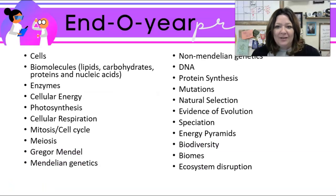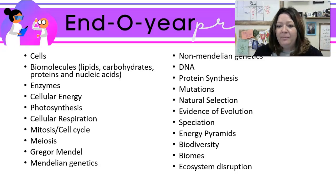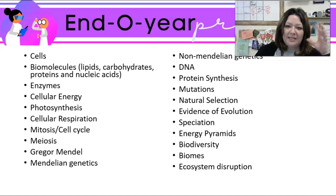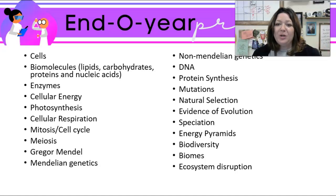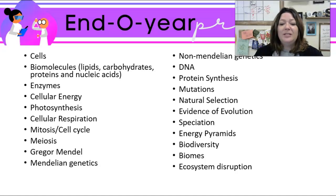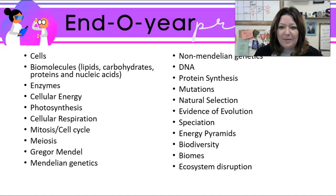I'm going to remind you of some of the things that we have learned. We've learned about cells, biomolecules, enzymes, cellular energy, photosynthesis, cellular respiration, mitosis, cell cytokinesis, Gregor Mendel, Mendelian genetics, Punnett squares, non-Mendelian genetics — so that would be everything from sex-linked traits to codominant and complete dominance — DNA, protein synthesis, DNA replication, mutations, natural selection, evidence of evolution, speciation, energy pyramids, biodiversity, biomes, and ecosystem disruption. Lots and lots of stuff.